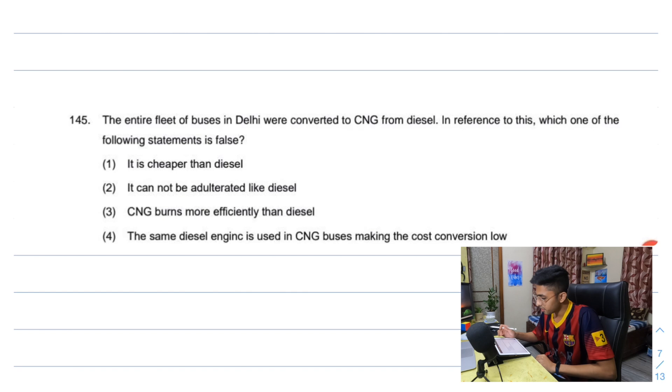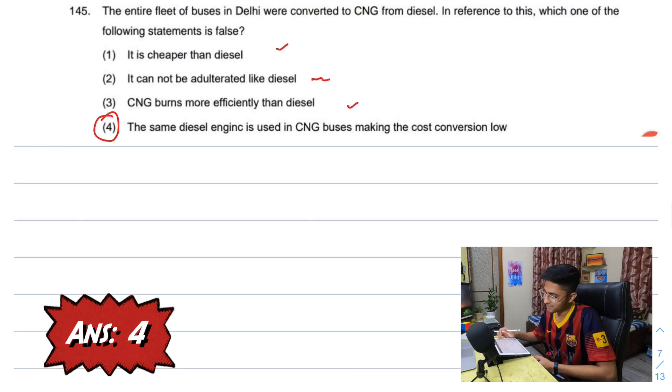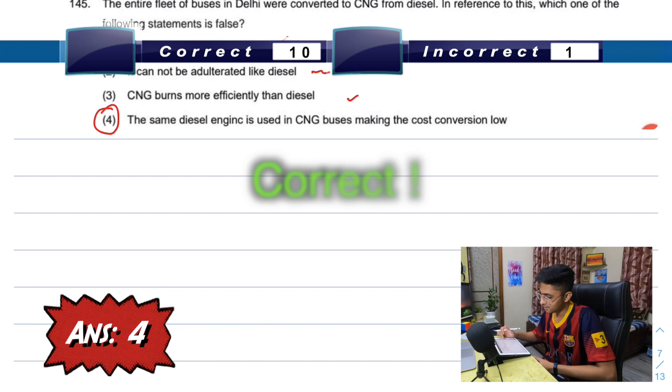The entire fleet of buses in Delhi were converted to CNG from diesel. In reference to this which of the following statement is false? It is cheaper than diesel, I guess. It cannot be adulterated like diesel, not sure about that. CNG can burn more efficiently than diesel, that is true. And the same diesel engine is used in CNG versus making the most cost conversion low. How can the same engine be used? No. I guess this is more of general knowledge. So that's incorrect. This one is false.